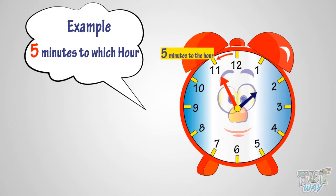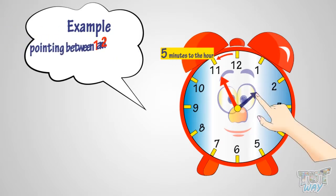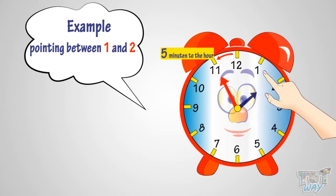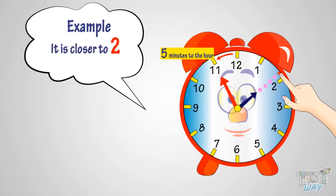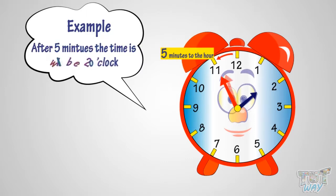See the hour hand — it is pointing between one and two, but it is closer to two. So it's five minutes to two o'clock. That means after five minutes the time will be two o'clock.